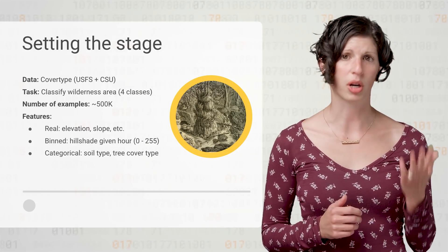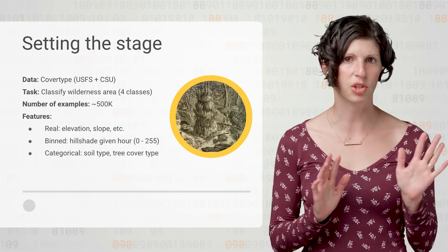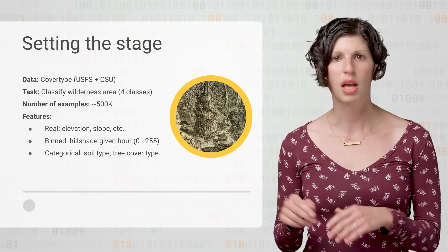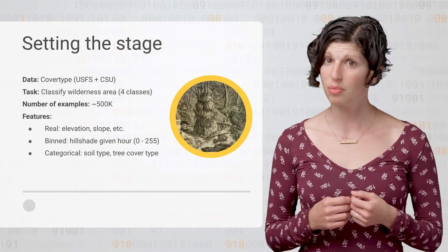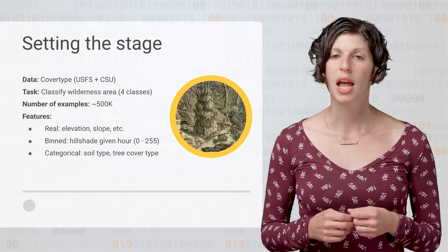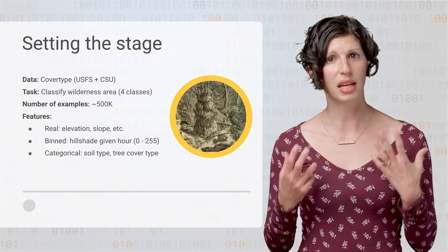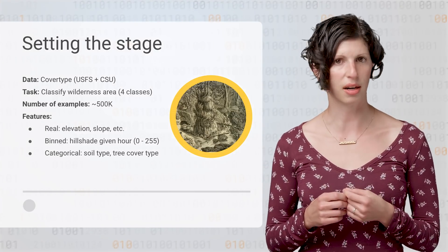And there are a mix of features that we'll be working with. Some are real values, elevation, slope, aspect, and so on. Some are real values that have been binned into an 8-bit scale. And some are categorical values that assign integers to soil types and wilderness area names.